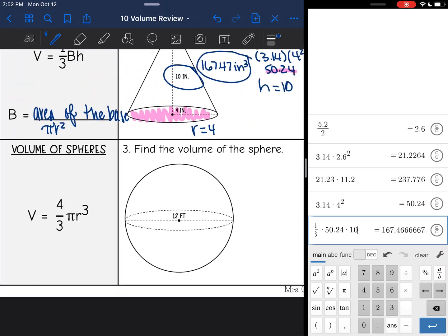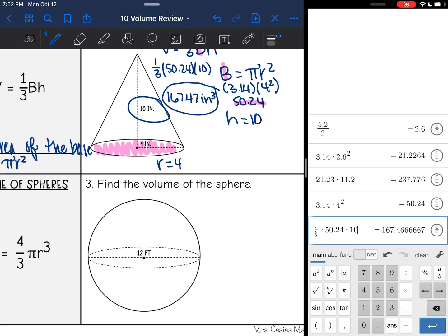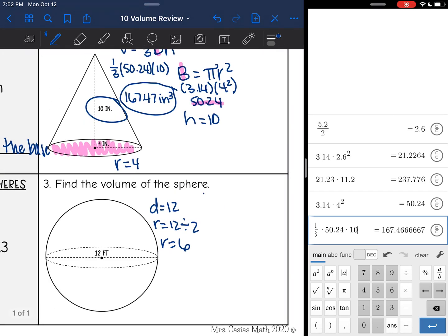Okay, and then the last formula is volume of spheres. All I need to find the volume of a sphere is the radius. They give me the diameter here. It is 12. To find the radius, I'm going to do 12 divided by 2. So the radius is 6. And now I have everything to find the volume of the sphere.